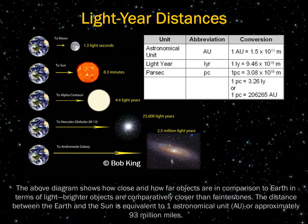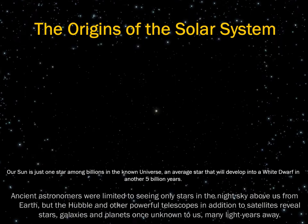It takes about eight minutes for one beam of sunlight to reach the Earth's surface. If the sun were to go completely dark, it would take about eight minutes of lag time before we noticed here on Earth. Ancient astronomers were limited to seeing only stars in the night sky, but the Hubble and other powerful telescopes, in addition to satellites, reveal stars, galaxies, and planets once unknown to us, many light years away. Our sun is just one star among billions in the known universe, as shown in an image from NASA's Eyes app.